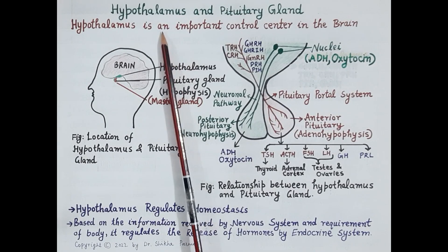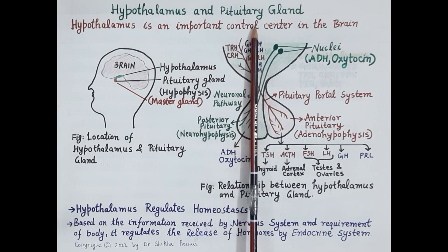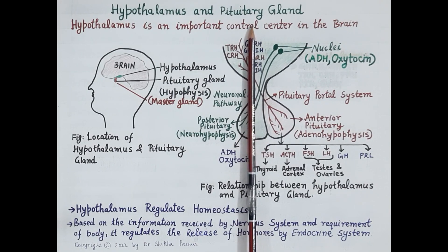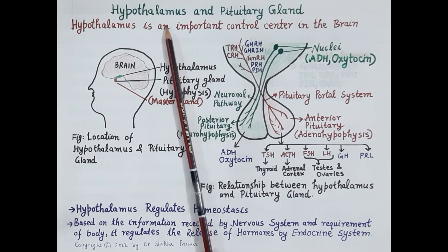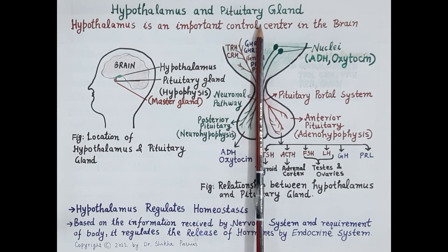Hello students. Hypothalamus and pituitary gland are the main endocrine glands of the human body. In today's video, we will study the basic structure and functions of hypothalamus and pituitary gland.